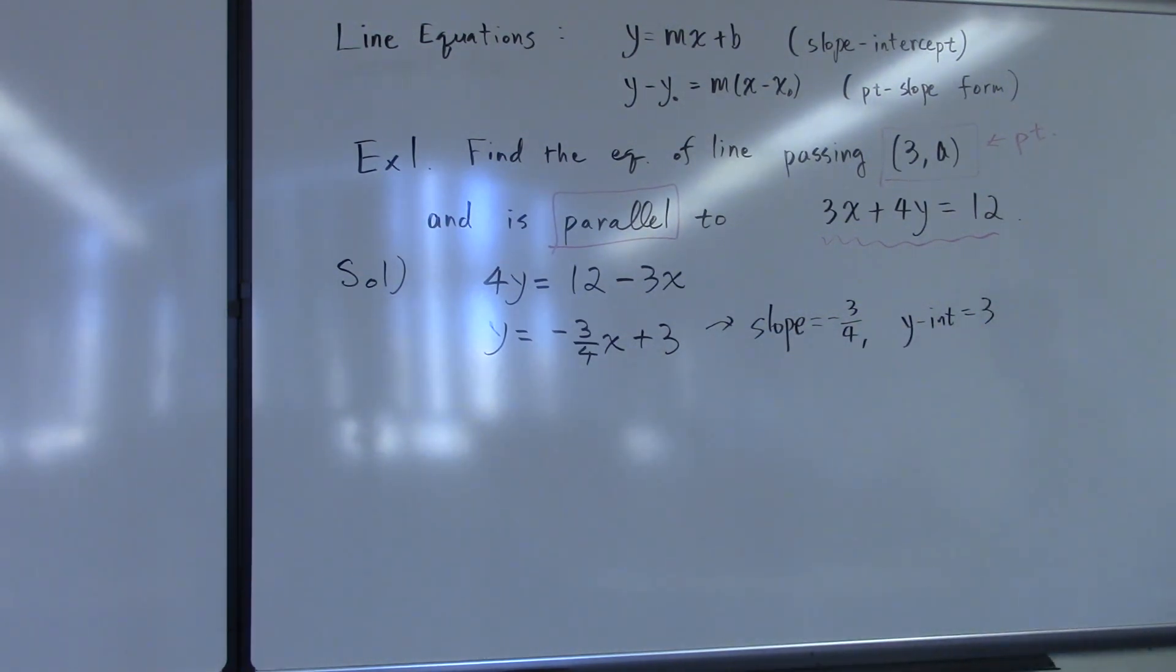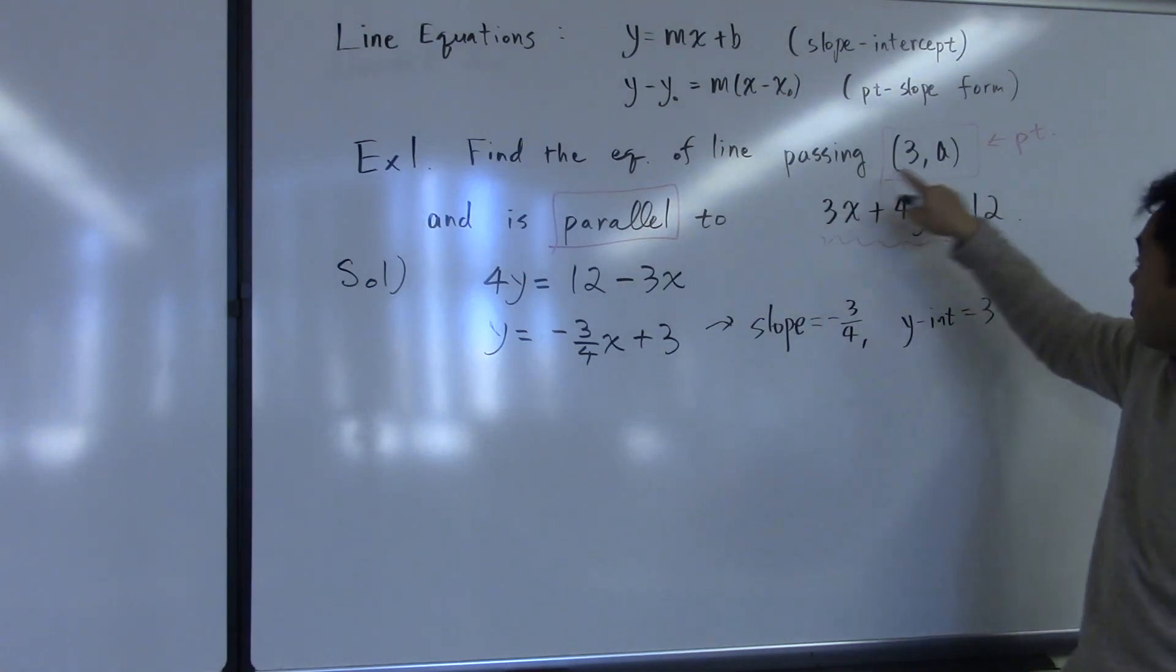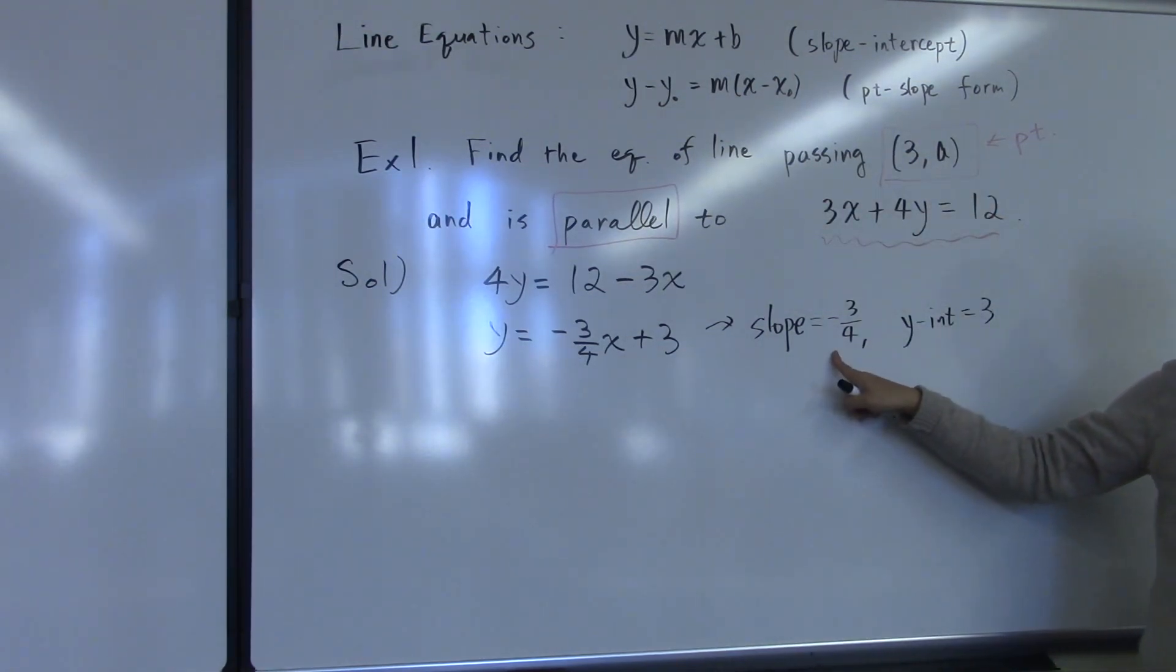But that's not what we want. We really want the equation of this line passing through 3 comma a and having the same slope as this one. So now, in order to get the equation of the line, we'll use the point-slope form.